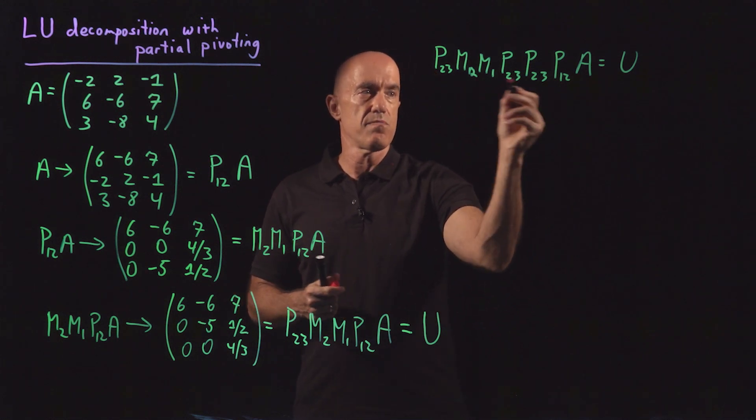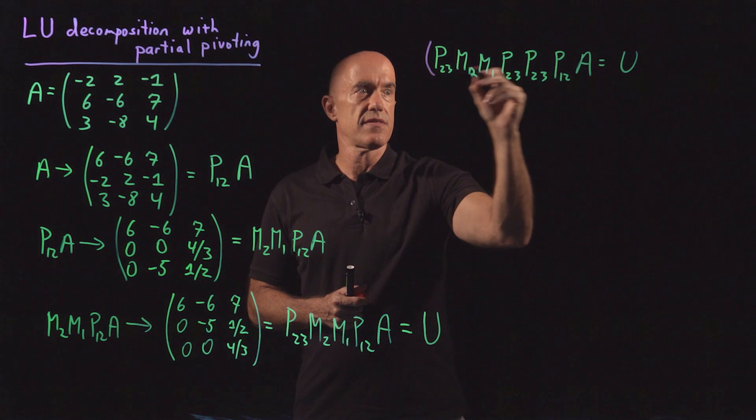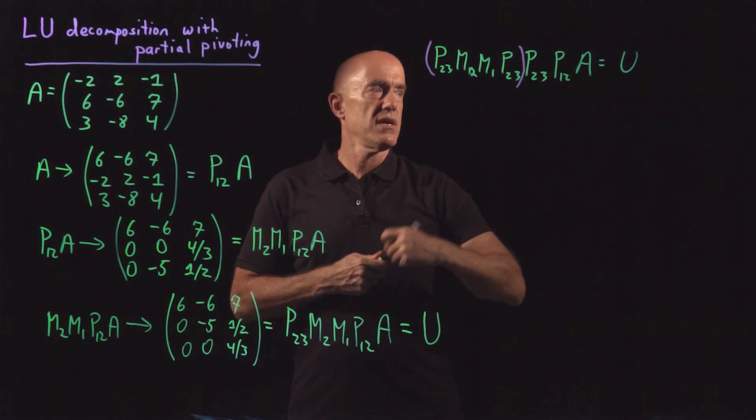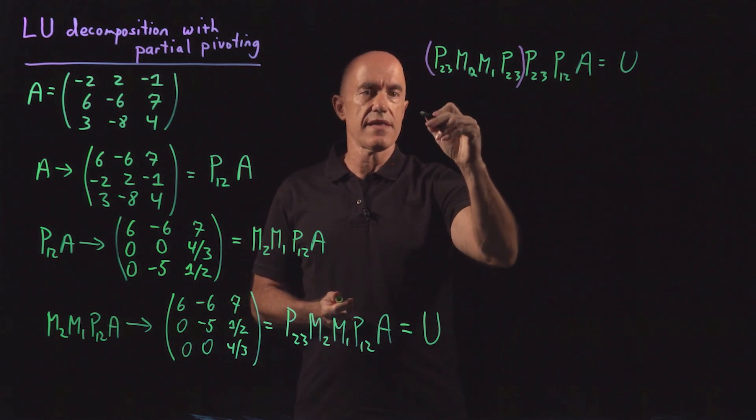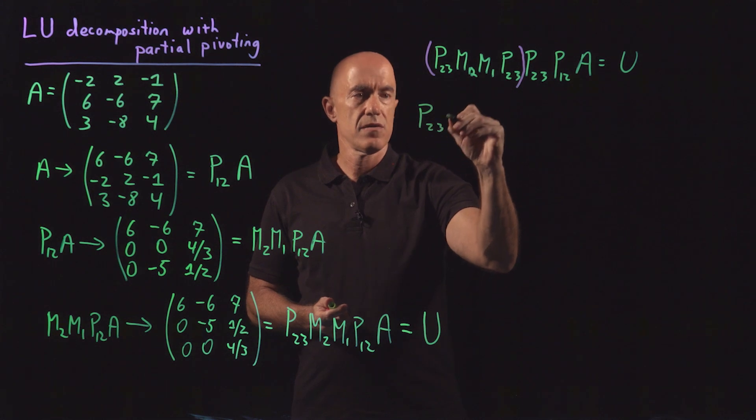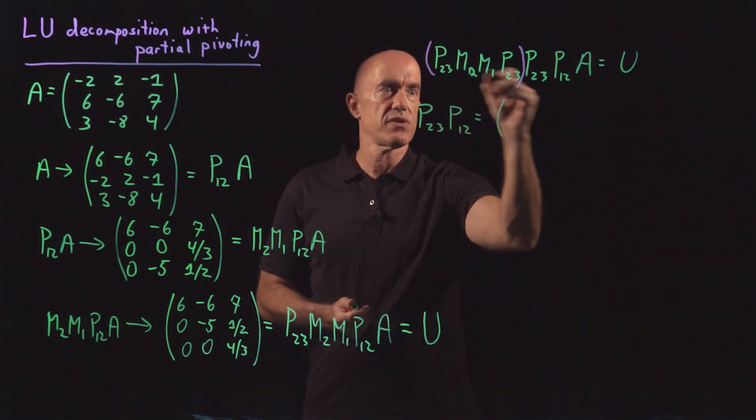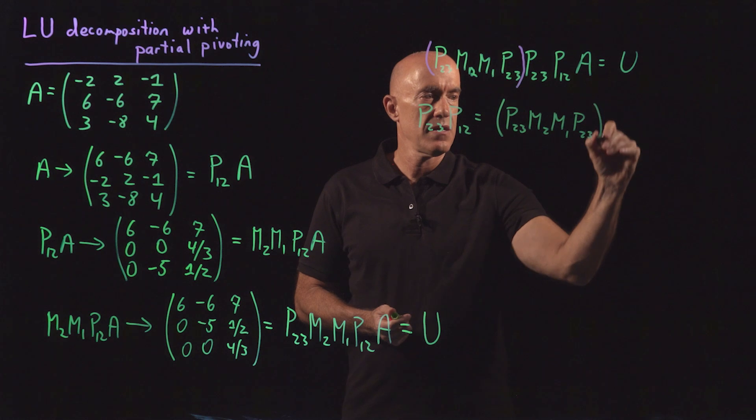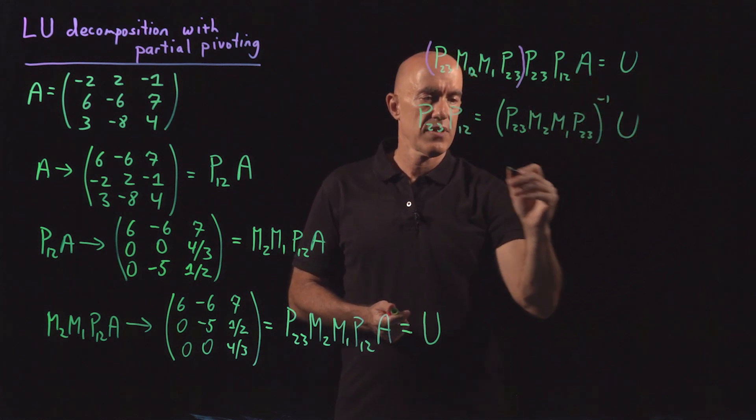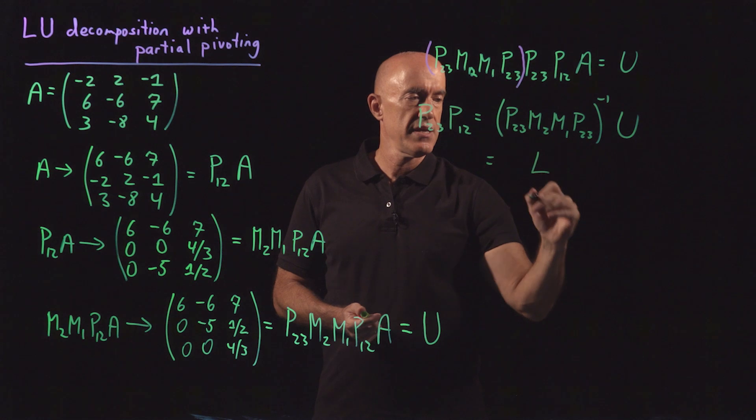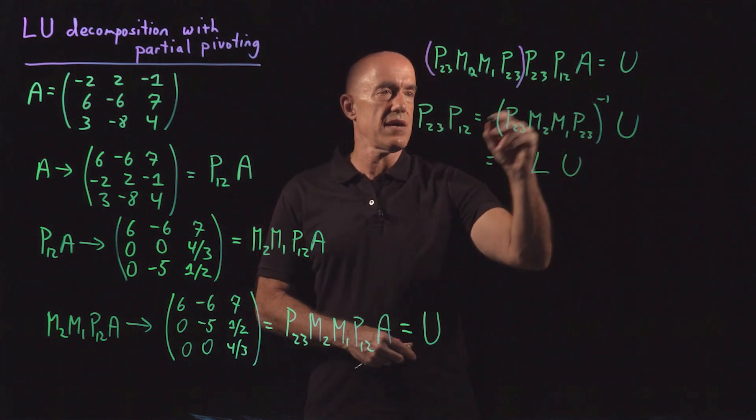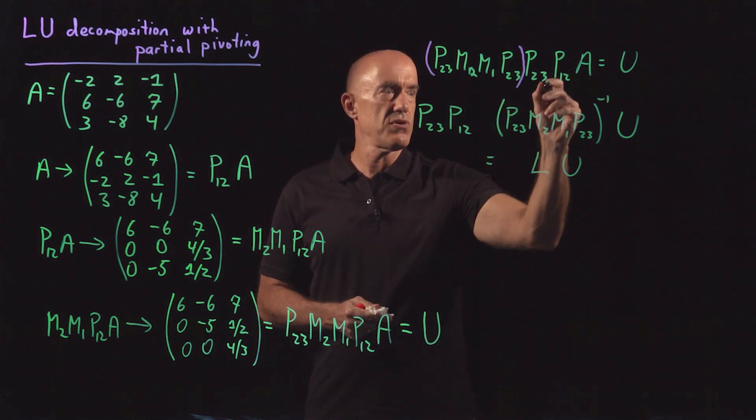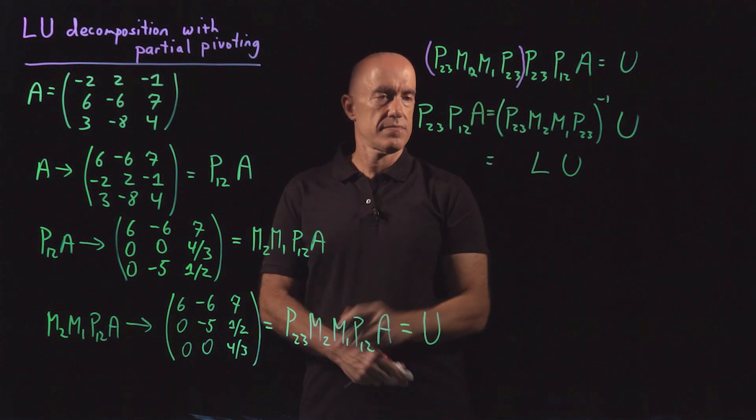This may seem like a trick, but if you go through the matrix multiplication, you'll see that this matrix here is a very nice matrix, a lower triangular matrix. And we can invert it, so we can write this now as P23, P12 equals this matrix here, P23, M2, M1, P23 inverse times U. And this matrix here, if you compute it, is lower triangular. So this is our LU decomposition. And I drop the A. Please forgive me. P23, P12, A.